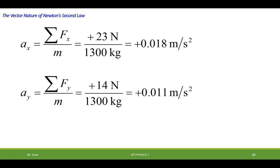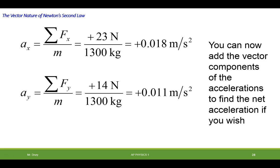Now, obviously, you can add the vector components of the accelerations and find the net acceleration if you wish. So in other words, it has an acceleration in the x and the y. We could use our Pythagorean theorem and figure out the net acceleration, and use the arc tangent or inverse tangent to figure out the direction, which we've done in previous lectures.